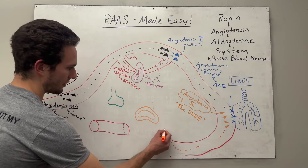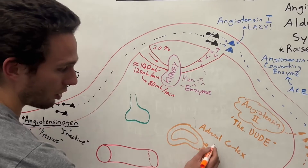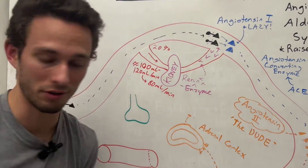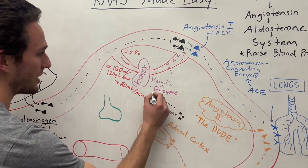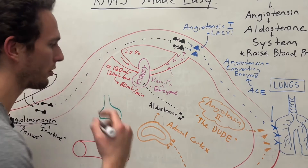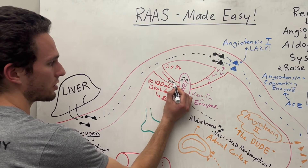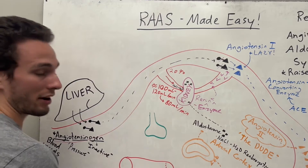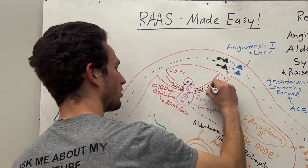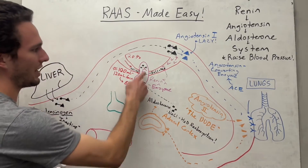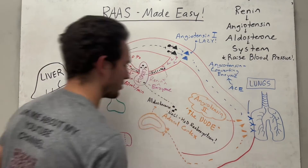First, angiotensin 2 acts on what's called the adrenal cortex. When it gets there, it binds to receptors, and the adrenal cortex produces a molecule called aldosterone. Aldosterone travels to the kidneys and tells them to reabsorb both salt and water. When aldosterone is present, instead of filtering salt and water out as urine, the kidneys throw it right back into the bloodstream. If we bring back fluid and salt into the bloodstream, blood volume goes up — therefore, we raise blood pressure.